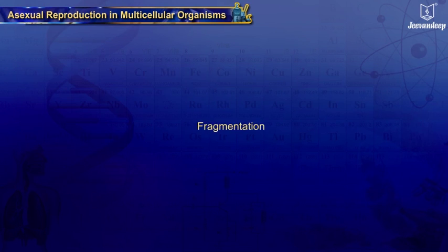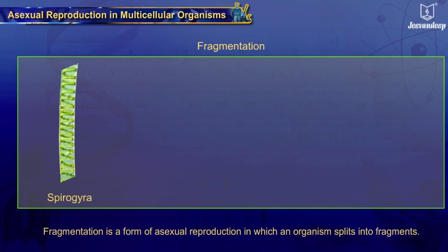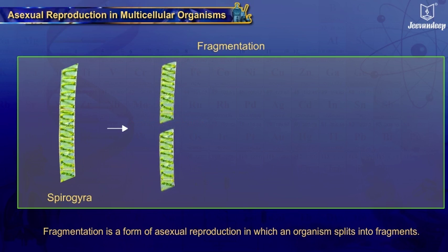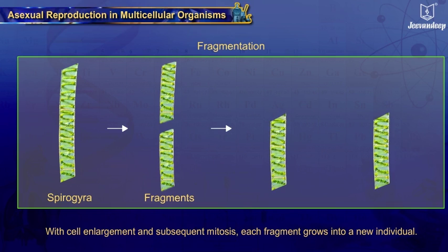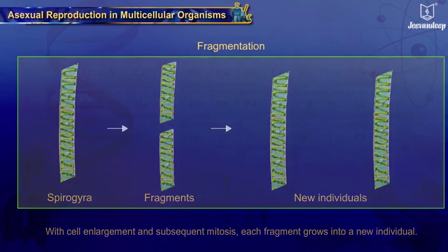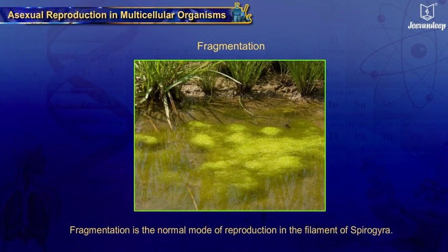Fragmentation is a form of asexual reproduction in which an organism splits into fragments. With cell enlargement and subsequent mitosis, each fragment grows into a new individual. Fragmentation is the normal mode of reproduction in the filament of Spirogyra.